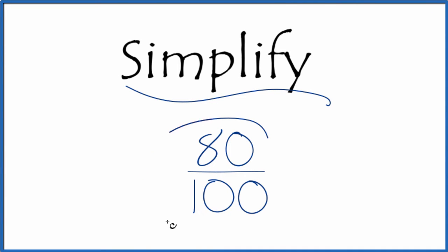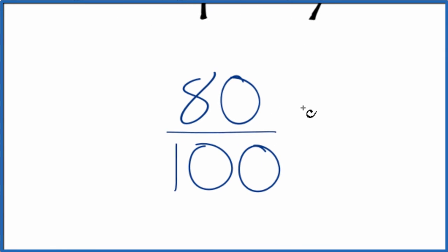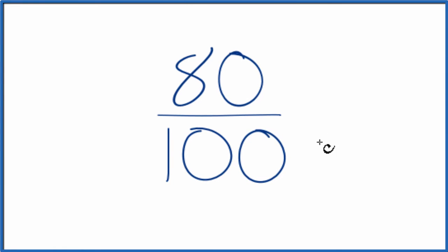Let's simplify the fraction 80 hundredths. Here's how we do it. We're looking for another fraction that's equivalent. It has the same value, it's just that we've reduced it to lowest terms.